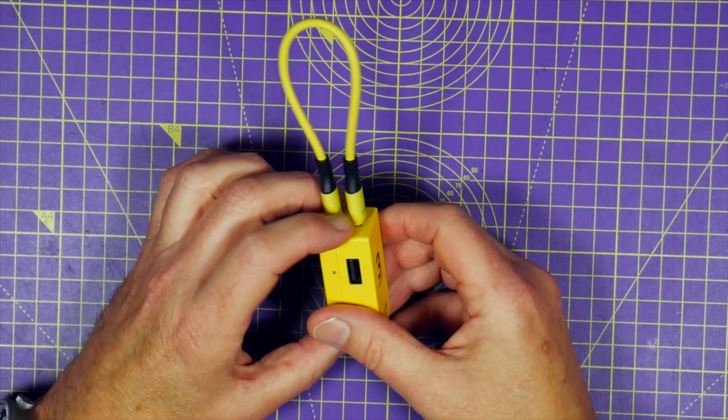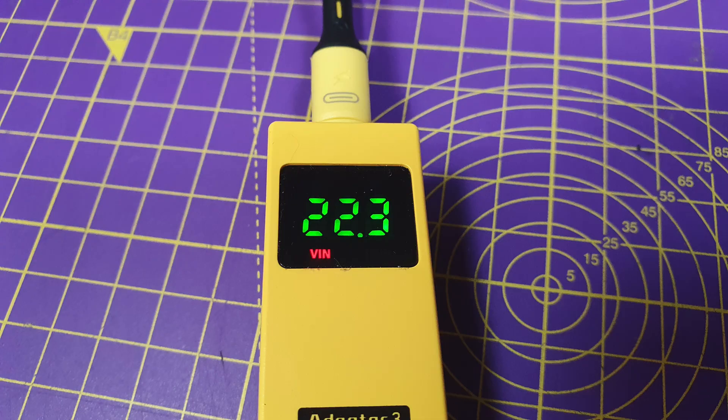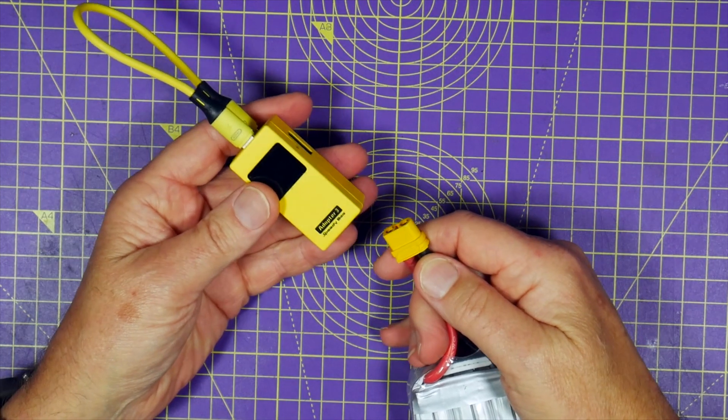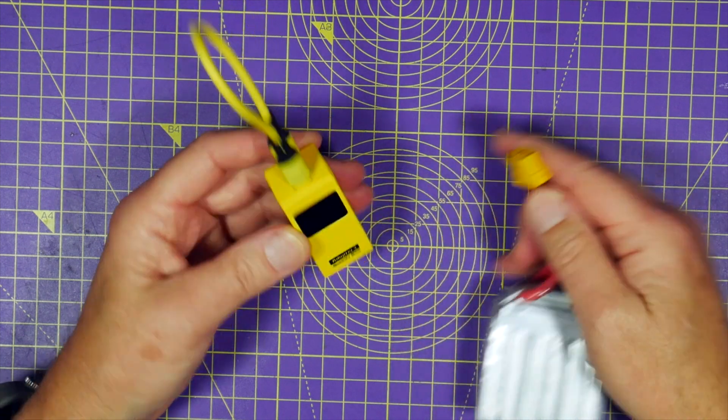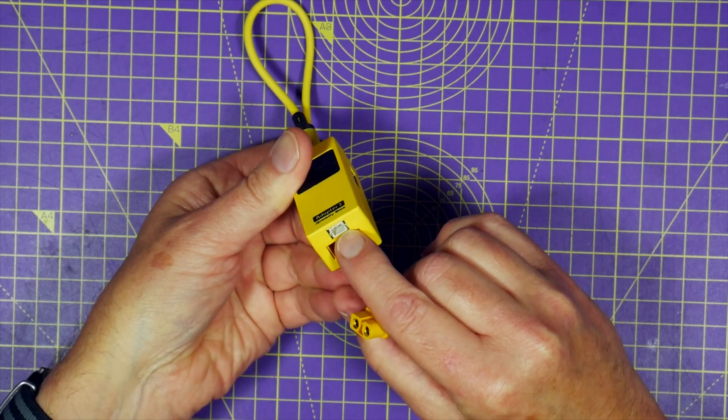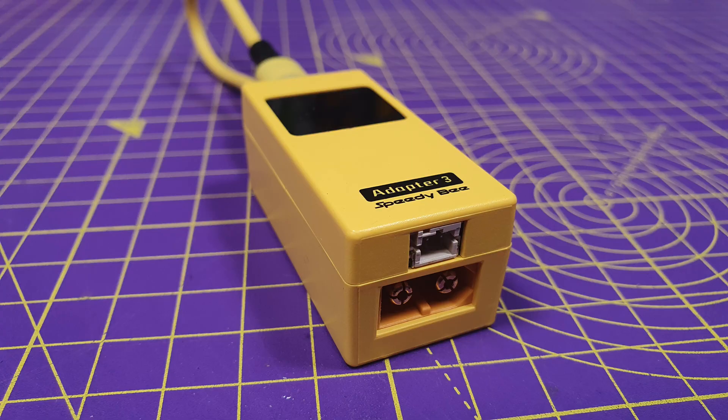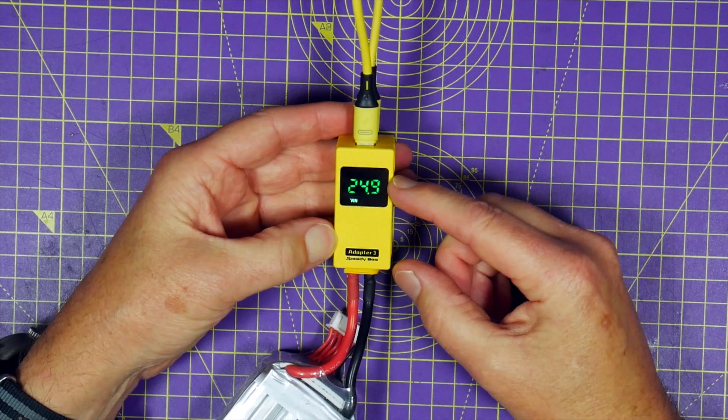And SpeedyBee have made some nice improvements to this. There's a display on the front which shows you the battery voltage. Just plug one of these in. You can use this on anything between 1S and 6S. There's an XT60 on the bottom here and a PH2 if you've got a 1S.